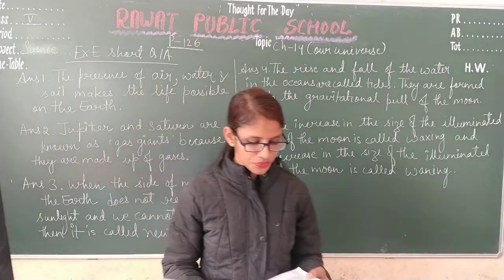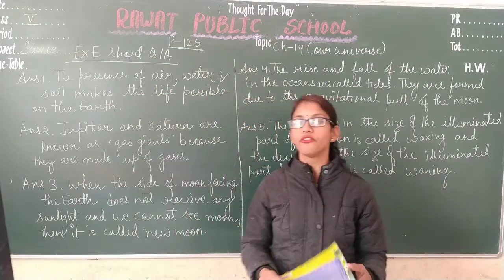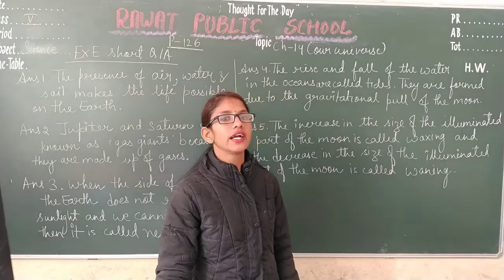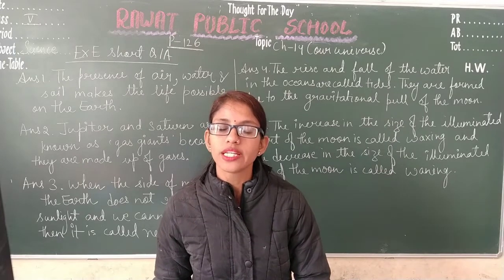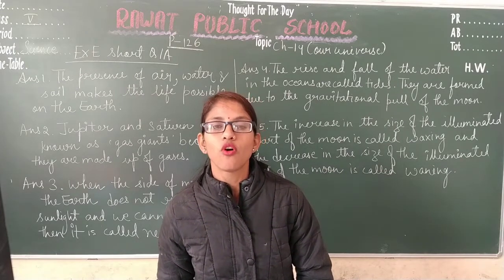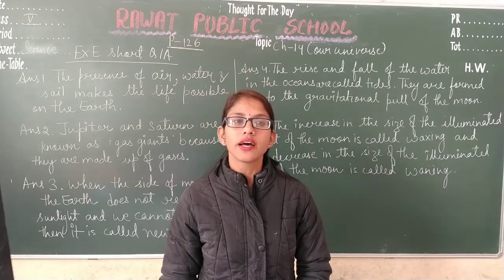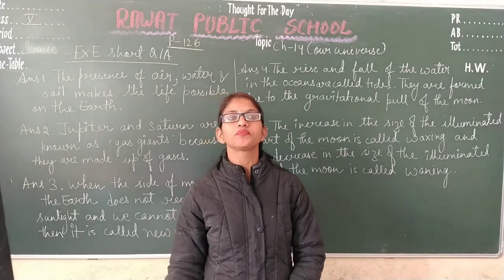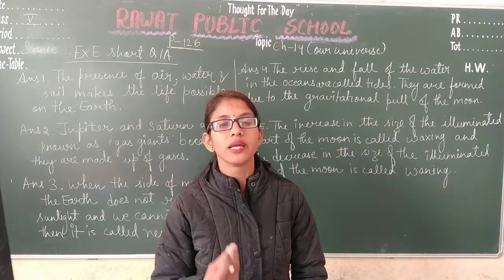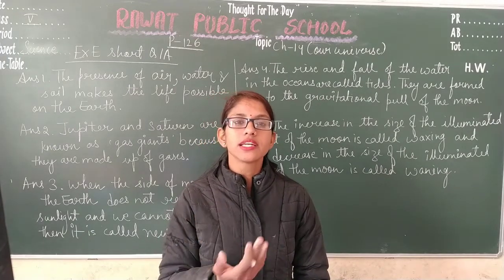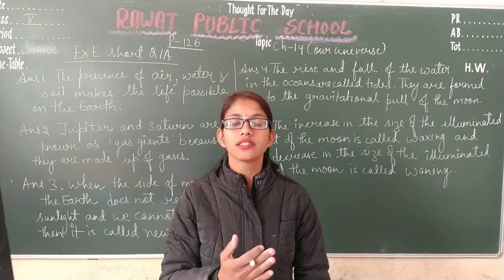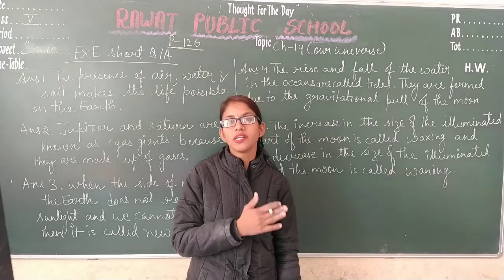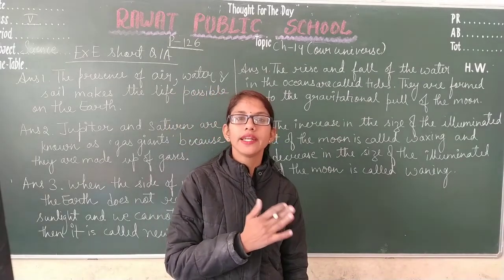Question number 5 is: what do you understand by waxing and waning? In this question, you have to write the difference between waxing and waning. As we have discussed, there are different phases of the moon — the different shapes of the moon we see in the night sky are known as phases, and they are formed as a result of the revolution of the moon around the earth. Only a part of the moon receives sunlight, which we can see from earth. After a new moon day, the illuminated part of the moon increases in size, and that is known as waxing.